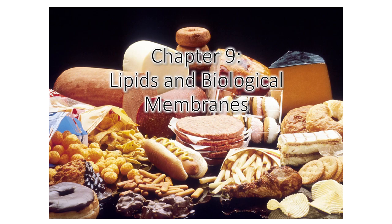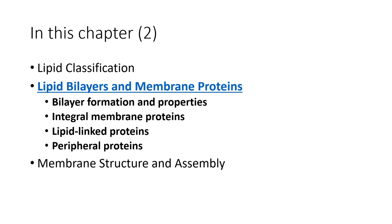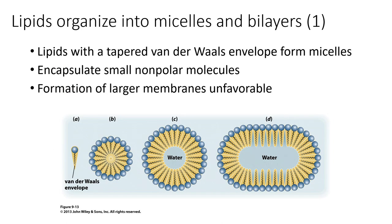Welcome to the next set of lectures about chapter 9, which is all about different lipids and biological membranes. This is our second lecture discussing lipid bilayers and membrane proteins. Topics covered include bilayer formation and properties, integral membrane proteins, lipid linked proteins, and peripheral proteins. In the next lecture we will talk more about membrane structure and assembly. In the previous lecture we talked about lipid classification.